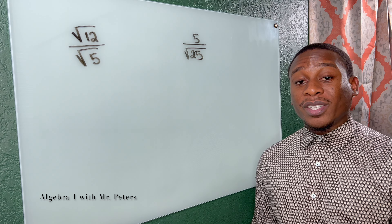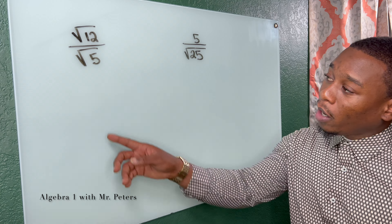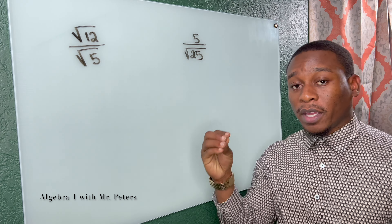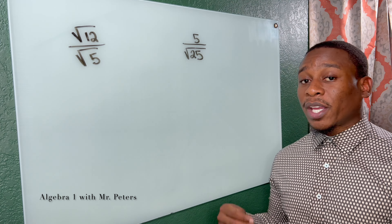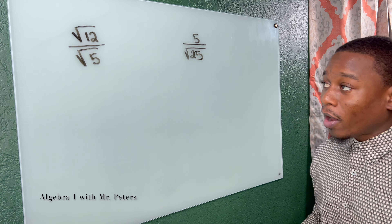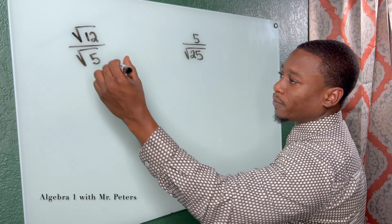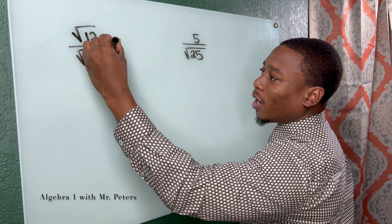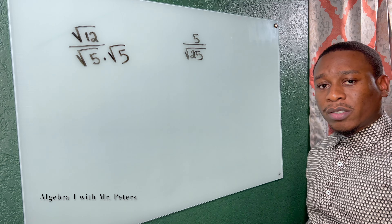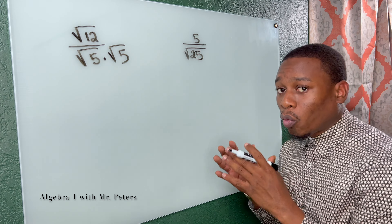The first thing we need to know with this topic is that we cannot have a radical in the bottom of a fraction. This is what we mean when we say rationalize — we're going to get rid of that radical in the denominator. And the importance of this part of the video is to understand perfect squares and radicals.